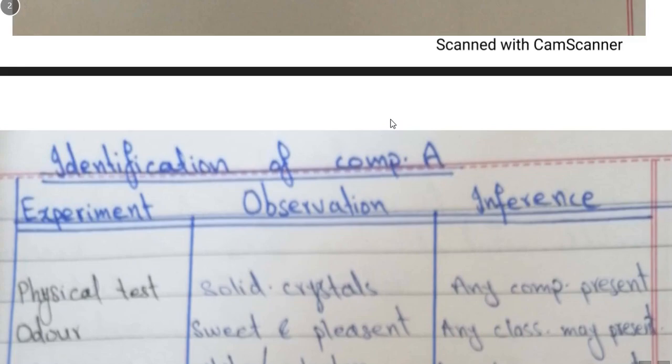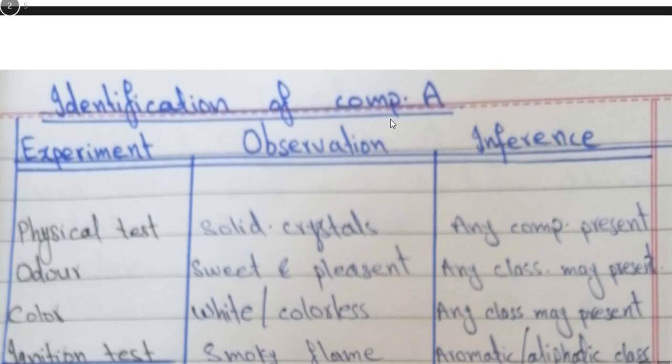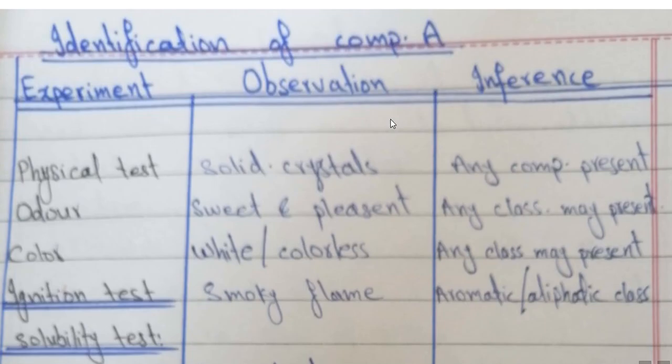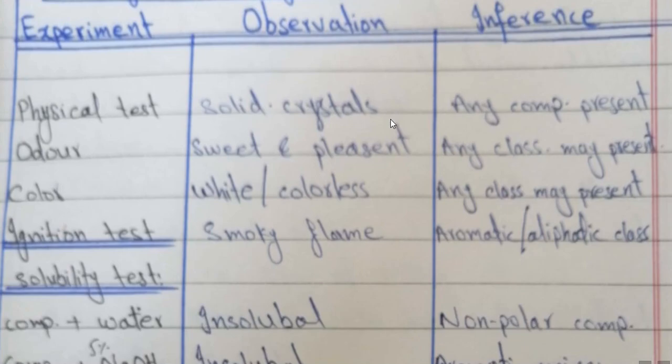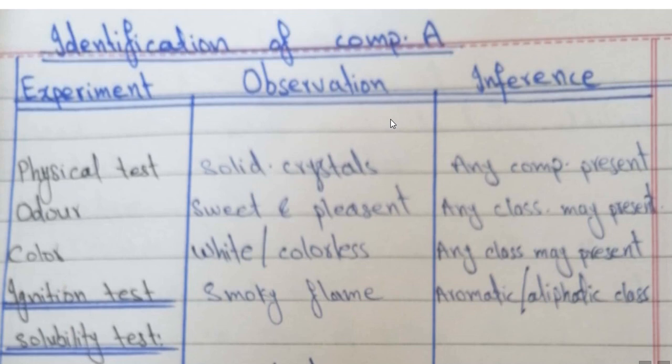Now we move to identification. The two components have been separated by the physical and chemical methods. For Component A — identify it. It is a solid, and it is a crystalline solid. There is a lot of organic chemistry involved. We check: it has a sweet and pleasant odor. Any class may be present. After checking the color — the color is white or colorless.